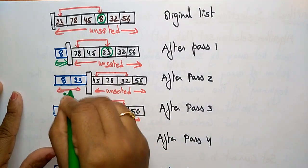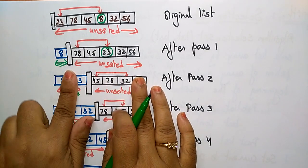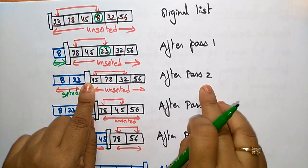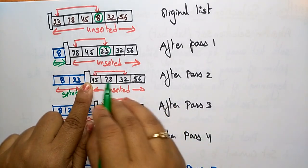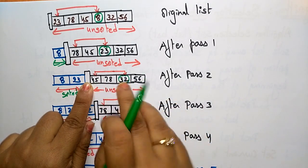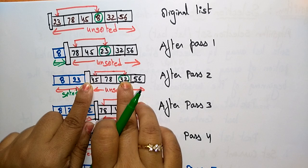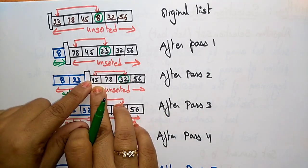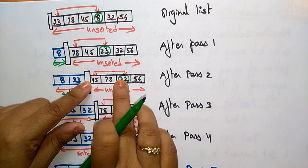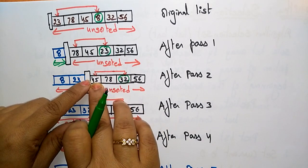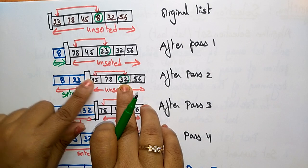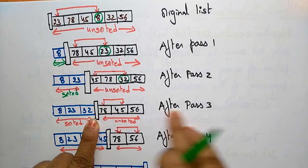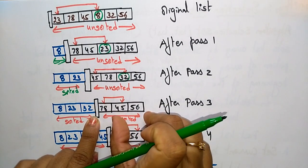23 moves to the sorted list — now 8 and 23 are sorted. Focus on the unsorted data. After pass 2 the least element is 32. Exchange the least element with the beginning of the unsorted list — the beginning element is 45. So bring 32 here and 45 goes there. 32 moves to the sorted list. After pass 3 the unsorted list contains 78, 45, 56. The least element is 45 — exchange with the beginning of the unsorted list.